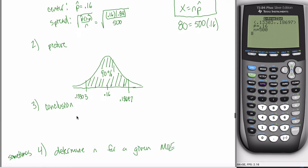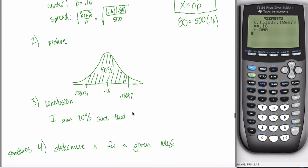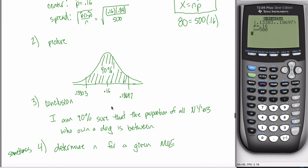Step 3 — Conclusion: The key is that it's the population proportion we don't know. I don't know my population proportion, but I'm 90% sure it's somewhere between those two bounds. State it in context: I am 90% confident that p — the proportion of all New Yorkers who own a dog — is between 13.303% and 18.697%. That's the conclusion, pretty similar to what we wrote last time we saw these problems.